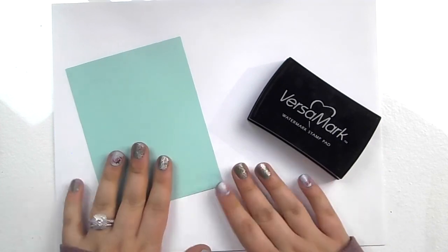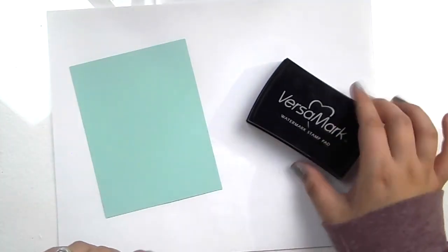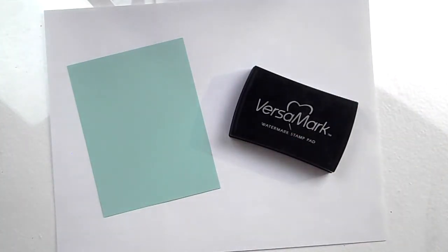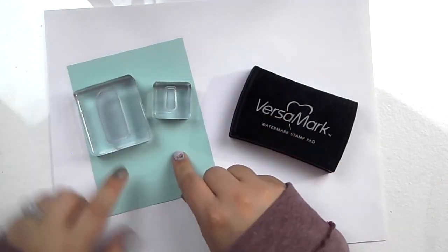Okay. So to start, I'm going to go ahead and get our background piece all nice and ready to go. So we're going to be using Versamark and we're going to be using these two stamps from the stamp set.